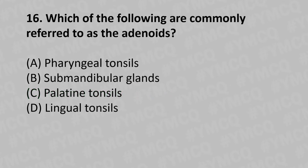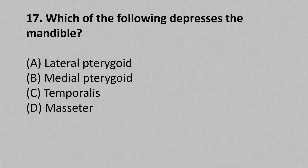Moving to our sixteenth question: which of the following are commonly referred to as adenoids? Option A: pharyngeal tonsil. Option B: submandibular gland. Option C: palatine tonsil. Option D: lingual tonsils. The answer is Option A: pharyngeal tonsils.